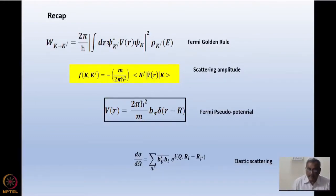From there, I went ahead and derived the scattering amplitude f(k',k), which is minus m by 2πℏ² times ⟨k'|V(R)|k⟩. It's in bracket notation, the same way I have written above in integral form. This is in Dirac bracket notation, where k is equal to e^(ik·R) and k' is e^(ik'·R), and it's an integration over R.